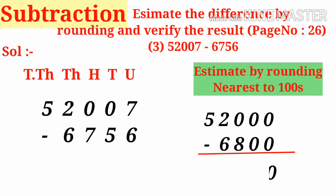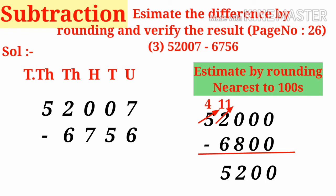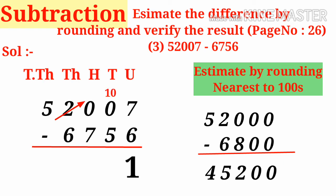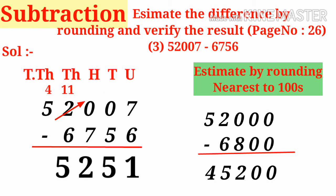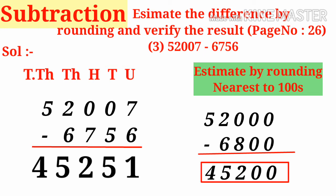By subtracting the estimated values, we get: 10 minus 8 is 2, 11 minus 6 is 5, and ten-thousands plus 4 gives 45200 as the estimated difference. Now doing the actual subtraction: 7 minus 6 is 1, 10 minus 5 is 5, 9 minus 7 is 2, 11 minus 6 is 5, and the last digit gives 4, so 45251. This is very near to 45200, confirming that rounding to the nearest hundreds gives accurate estimation in subtraction.